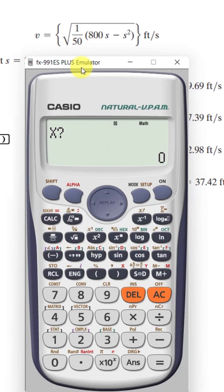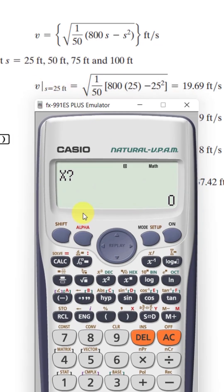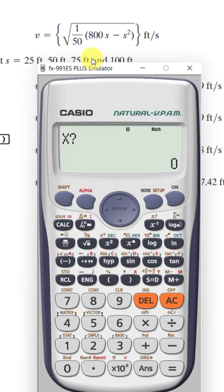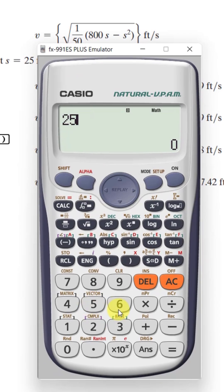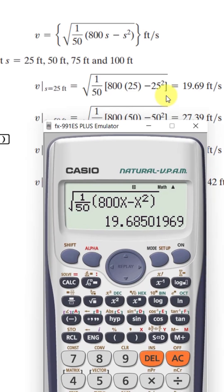So calculate, and now we want to find for s equals to 25, 50 and 75 and 100. So for 25 equal, the value is 19.685 which is 19.69.